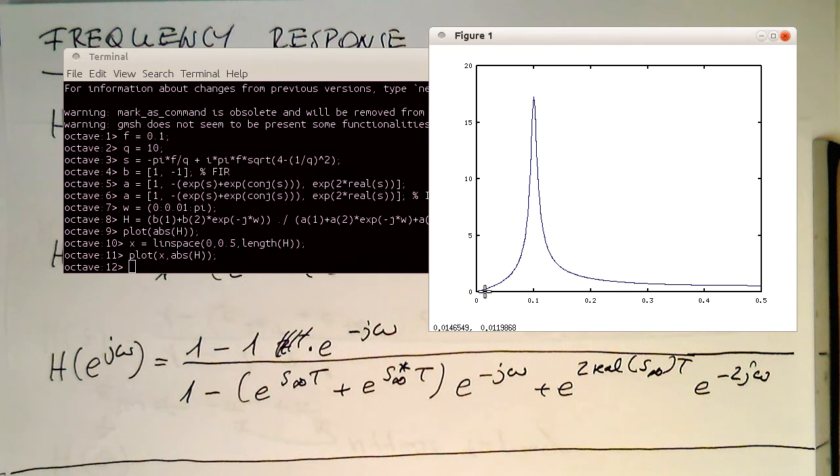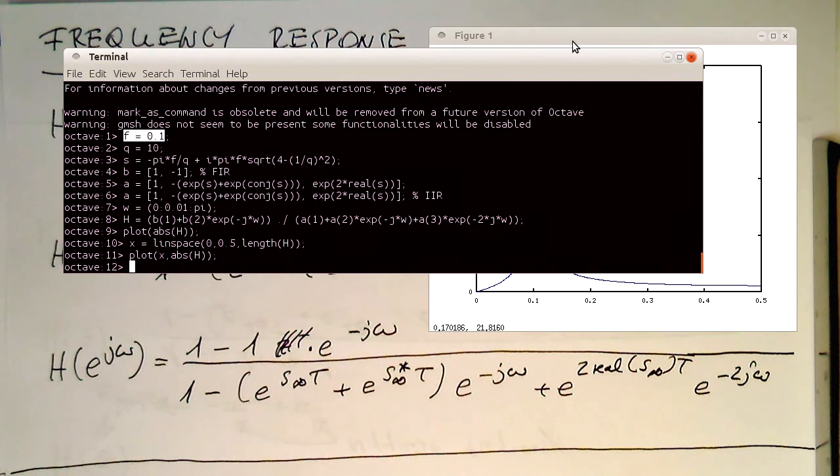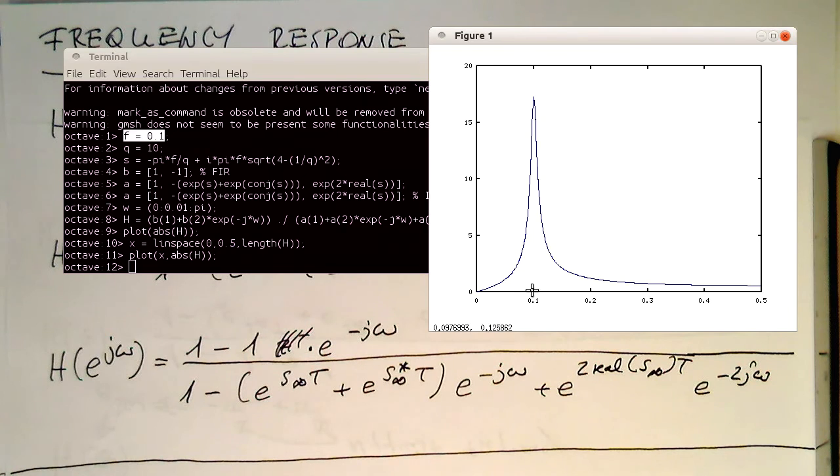And so now we have our filter response with proper normalized frequencies here. And we see quite nicely that this f 0.1 here, that this gives us here a peak exactly at f 0.1, which works pretty well.